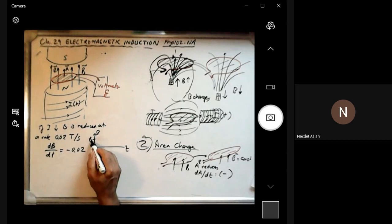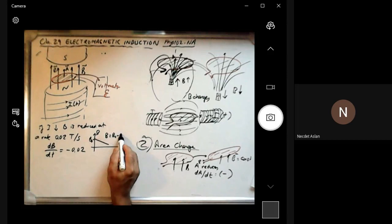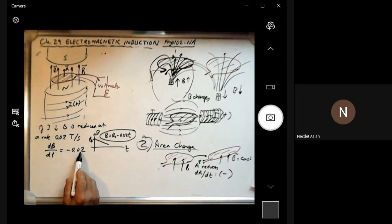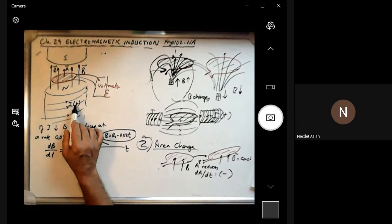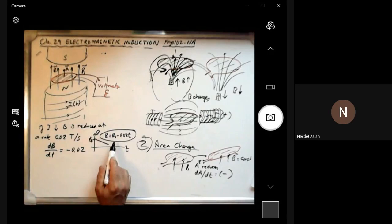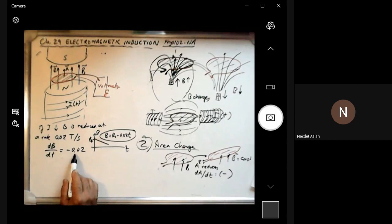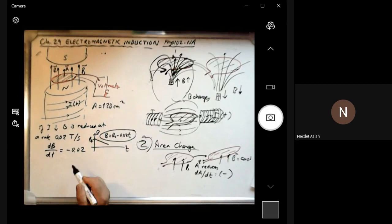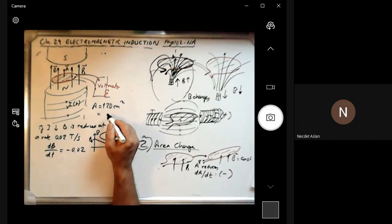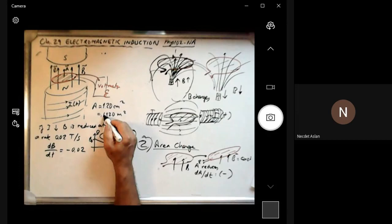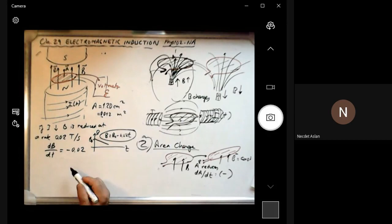B equals B₀ minus 0.02t — this is the equation for the magnetic field. The magnetic field is reducing. The area of the conducting loop is 120 centimeters squared. Going from centimeters squared to meters squared requires four zeros, so it's 0.012 meters squared. The total circuit resistance including the meter is 5 ohms. As soon as you connect the voltmeter, there is also an external resistance connected, which must be considered. But the total is 5 ohms.